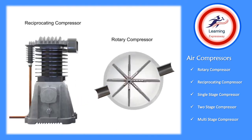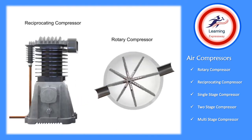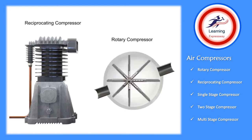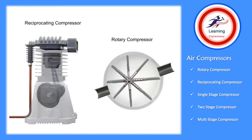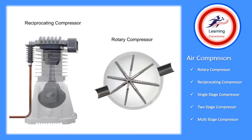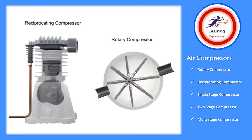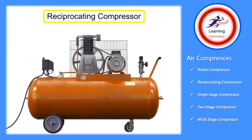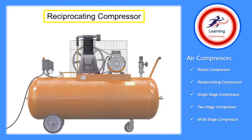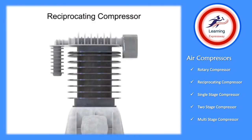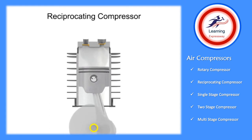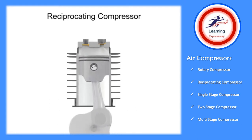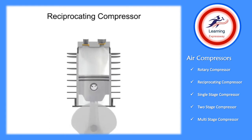Rotary compressors are typically free of the vibration and pulsation that occurs with reciprocating compressors. A typical reciprocating compressor consists of a housing with an internal piston connected to a crankshaft. As the crankshaft turns, a piston reciprocates within the cylindrical housing.